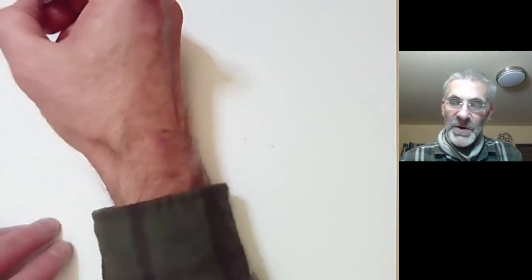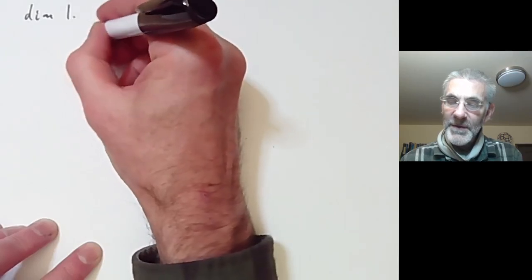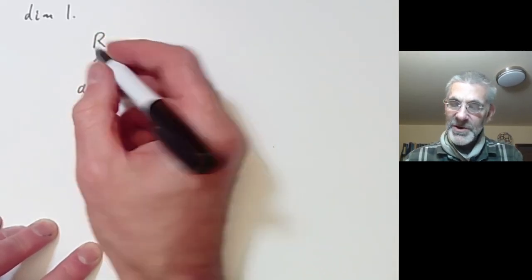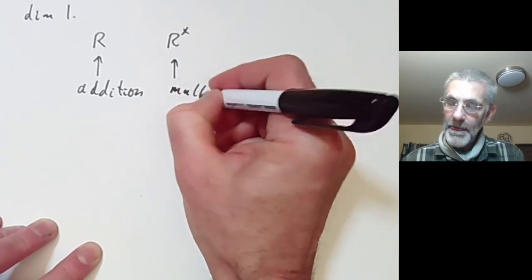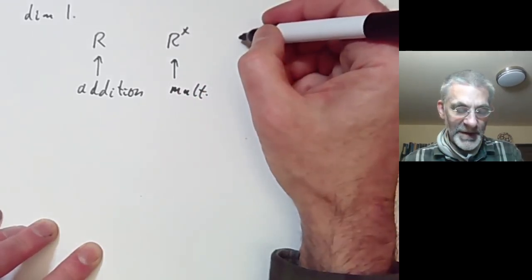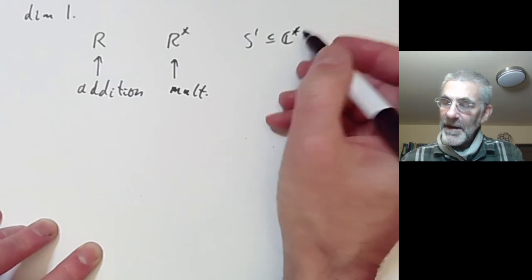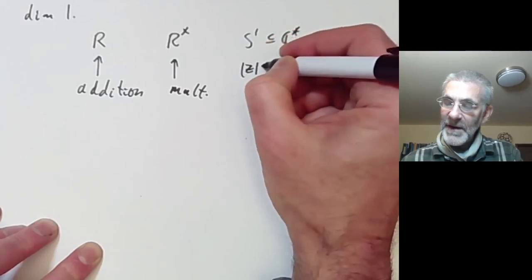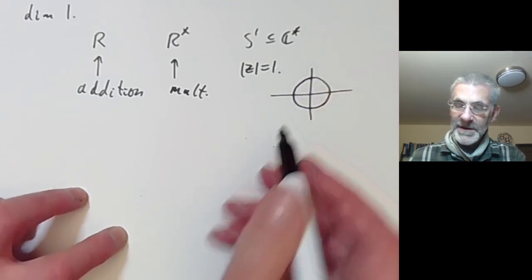Now let's move on to the dimension one case, where there are several obvious examples. First, we have the real numbers under addition — obviously a one-dimensional Lie Group. Second, we have the non-zero real numbers under multiplication. And there's another example: the circle group S¹, contained in the non-zero complex numbers — the complex numbers z with absolute value equal to one. It's called the circle group because it looks very much like a circle.